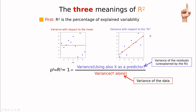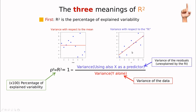On the other hand, if the predictor x is unrelated to the variable y, then the residual variance is going to equal the total variance — they have the same variance with and without x — and R-squared is going to be zero. So if we multiply R-squared by 100, R-squared is the percentage of explained variability by the inclusion of the parameter x.